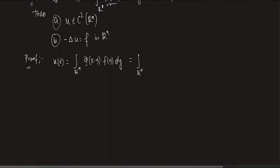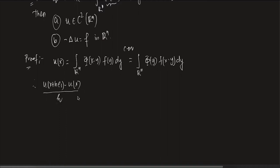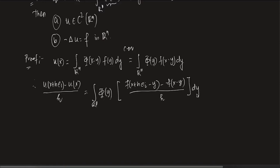So, u(x) = ∫_{ℝⁿ} φ(x − y) f(y) dy. I do a change of variable, which gives ∫_{ℝⁿ} φ(y) f(x − y) dy. I want to show u is in C². So let's show the partial derivative ∂u/∂xᵢ = lim_{h→0} [u(x + heᵢ) − u(x)]/h, which equals ∫_{ℝⁿ} φ(y) · [f(x + heᵢ − y) − f(x − y)]/h dy.